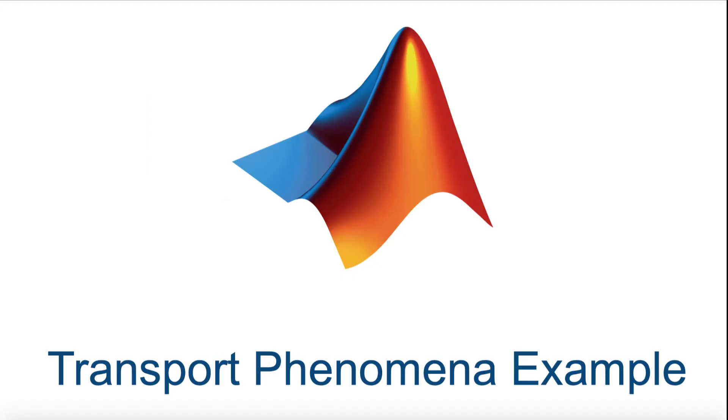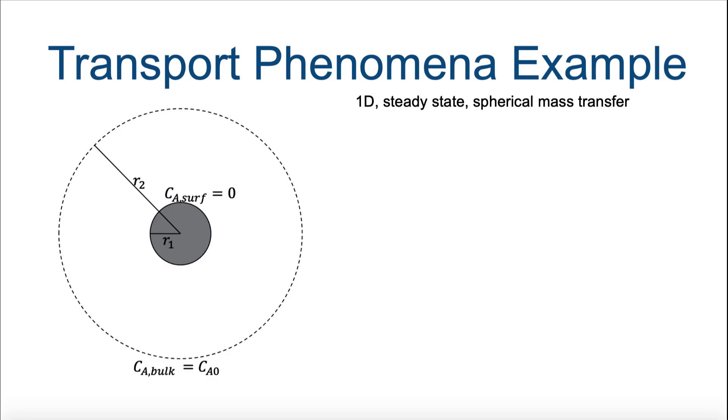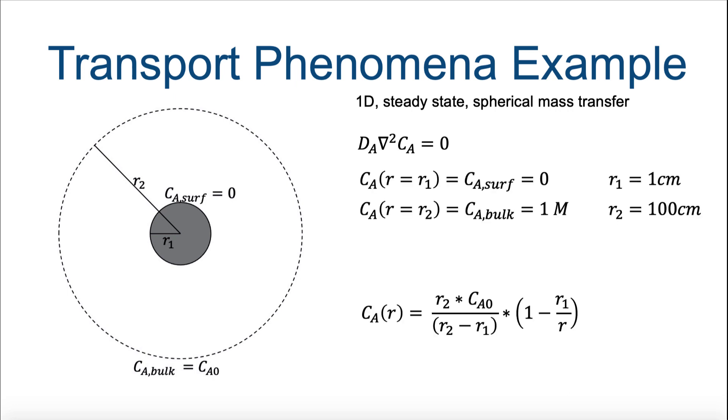Now, let's apply everything we've learned to a chemical engineering transport phenomena problem. Let's say your professor wants you to plot the concentration profile of the consumption of chemical A, which is an instantaneous reaction on the surface of a pellet suspended in bulk chemical A. By identifying proper problem geometry and boundary conditions, you've determined that the following equation is appropriate.